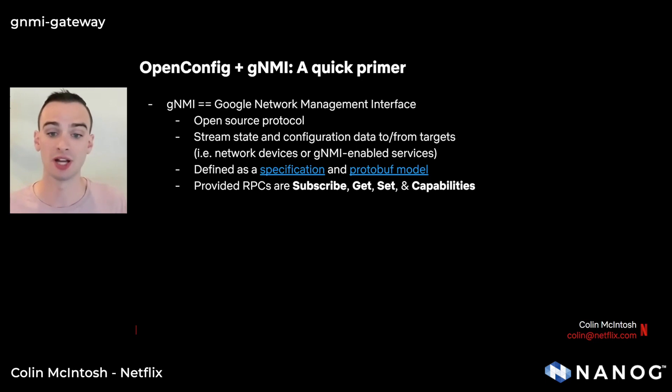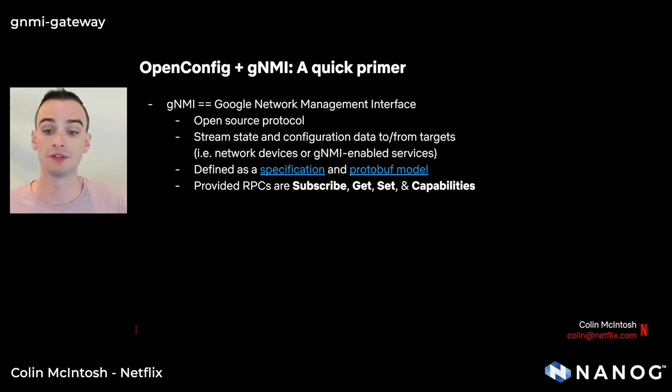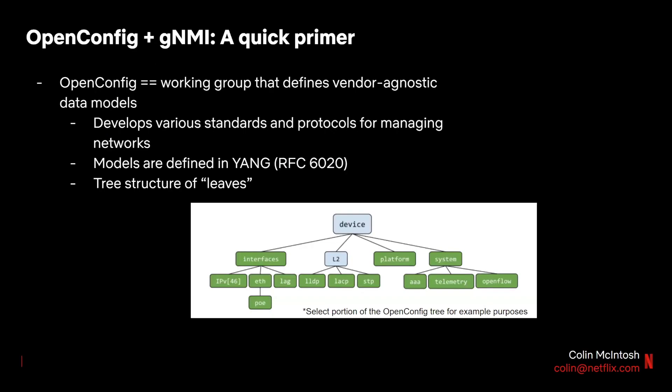GNMI is defined as a specification and a protobuf model, both of which are available on GitHub, and I've linked out to them here from my slides. While GNMI is used to stream the data to and from targets, the data itself is structured using OpenConfig data models. OpenConfig is a working group of operators and vendors that have defined a set of data models describing the state and configuration of network devices. These models are defined in Yang, a data modeling language defined by the IETF in RFC 6020, and these models are organized into a tree of various leaves. I've included a small excerpt of the OpenConfig tree — note this is only a small portion; it's actually much larger than this.